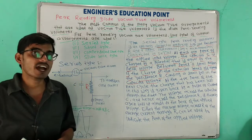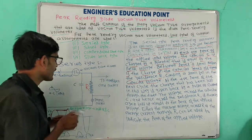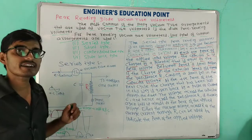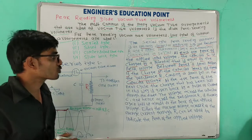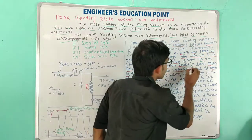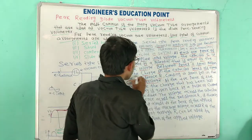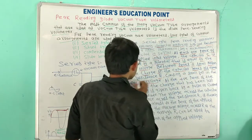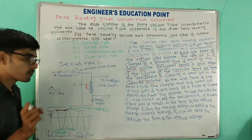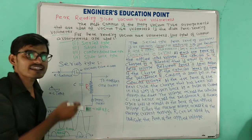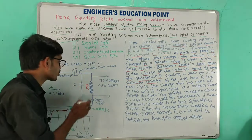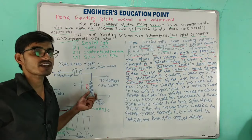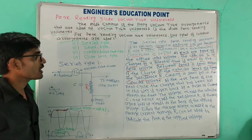Between peaks, a small portion of the charge on the capacitor leaks off through the resistance R. Because of the high value of resistance, the capacitor begins to discharge slowly through it after becoming fully charged.